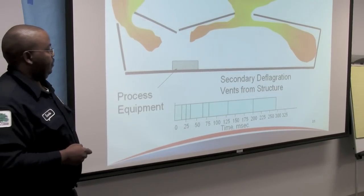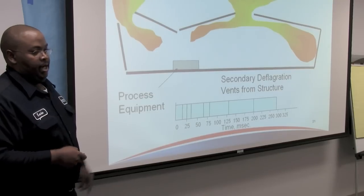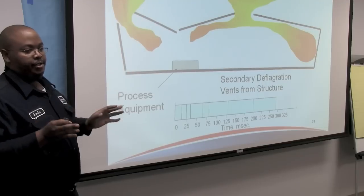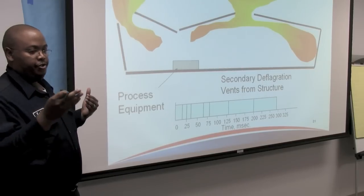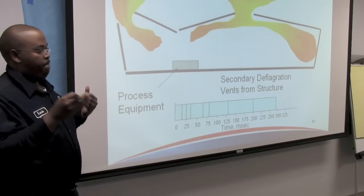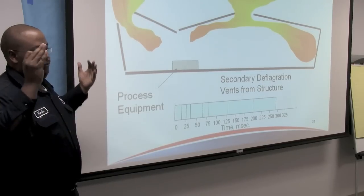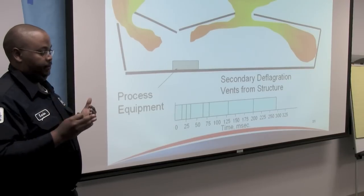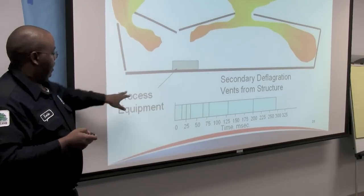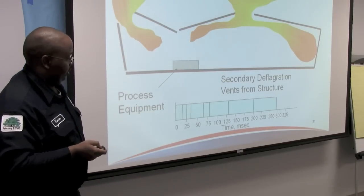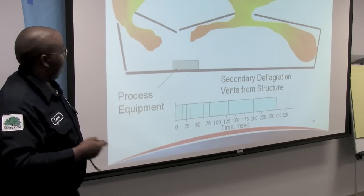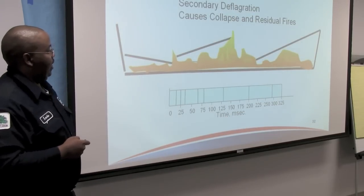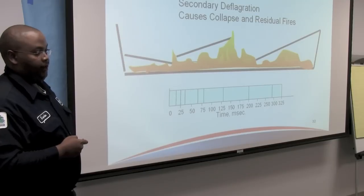At 300 milliseconds, the secondary deflagration vents from the structure. When that deflagration starts, it's going to vent itself and go through whatever it can. Secondary deflagration then causes collapse and residual fires.